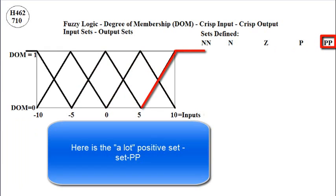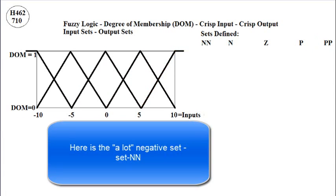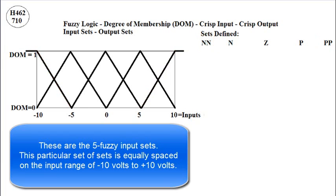Notice the saturation in values greater than 10. And here is the lot negative set, set NN — it also has saturation for values less than negative 10. These are the five fuzzy input sets, equally spaced on the input range of negative 10 volts to plus 10 volts.